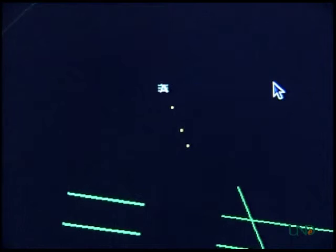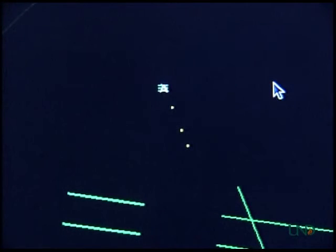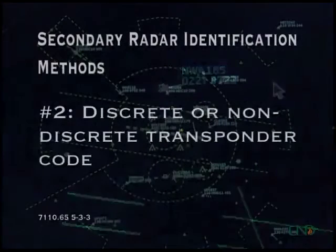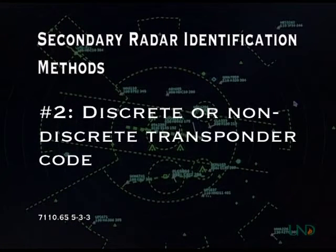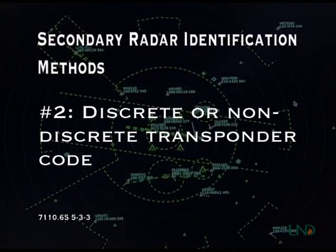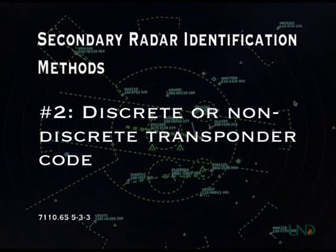Northwest 185, radar contact, 3 miles north of Academy Airport. The second method involves instructing the pilot to change to a discrete or non-discrete transponder code, and to observe the change on the radar display.